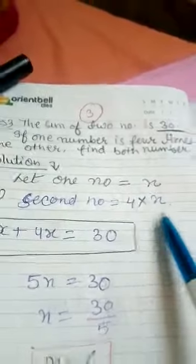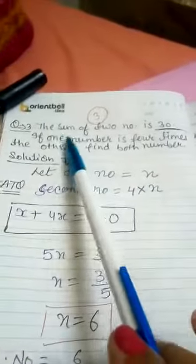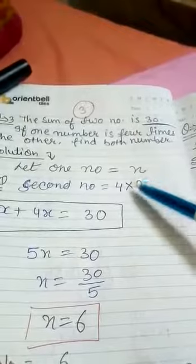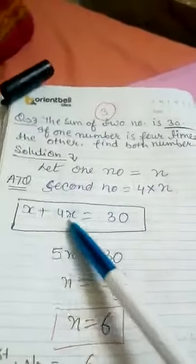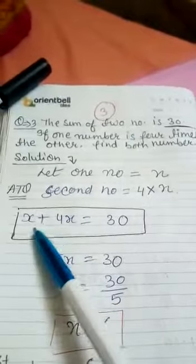So the sum of two numbers is 30, means when we are adding both the numbers our sum is 30. x + 4x. Sum is asked, that's why we have used the plus sign here. The sum of both is coming 30.